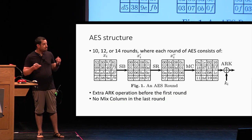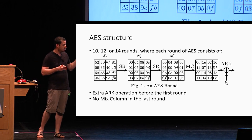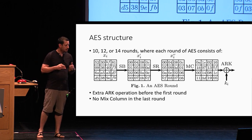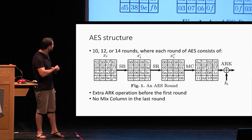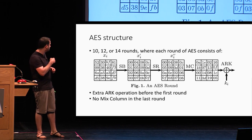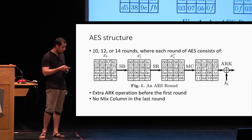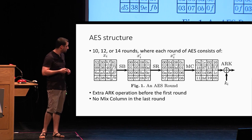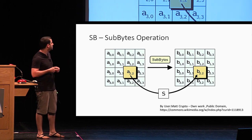As most of you are familiar with, this is the structure of AES. We have 10, 12, or 14 rounds. In each round we have four operations. The first is the sub-byte operation, then shift-rows, mix-column, and add-round-key. In the first round we have an extra add-round-key operation, and there is no mix-column operation in the last round.